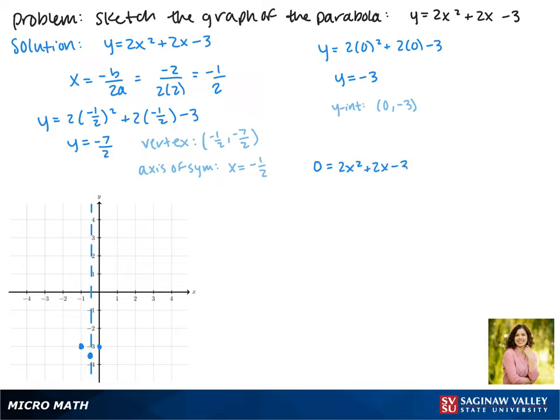Now we can find our x-intercepts by plugging in a 0 for y. Since this equation cannot be factored, we're going to use the quadratic formula. So here, x equals negative b plus or minus the square root of b squared minus 4ac all over 2 times a. Working this out, we get our x to be equal to negative 1 half plus or minus 1 half times the square root of 7.